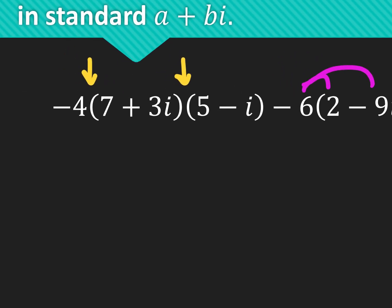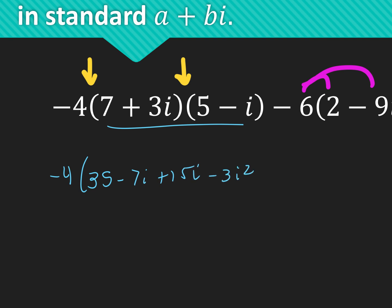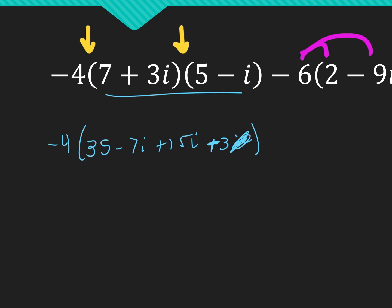So I'm going to first leave my negative 4 out here and FOIL these two. 7 times 5 is 35. 7 times negative i is minus 7i. 3i times 5 is plus 15i. And 3i times negative i is negative 3i squared. As soon as I see that i squared, I cross it off and change the signs. So I still have my negative 4 out here. Combining: 35 and 3 is 38. And negative 7i and positive 15i is plus 8i.